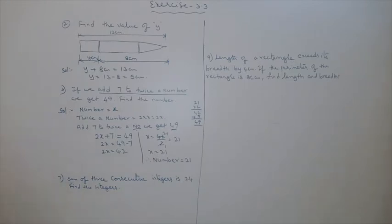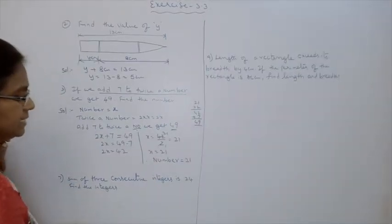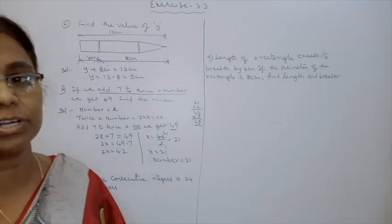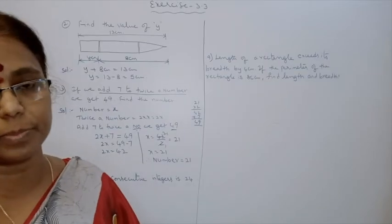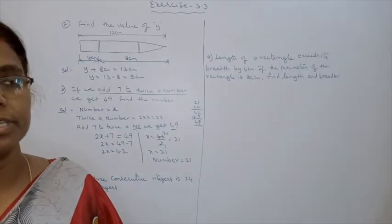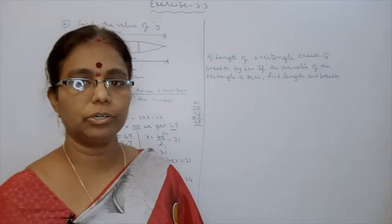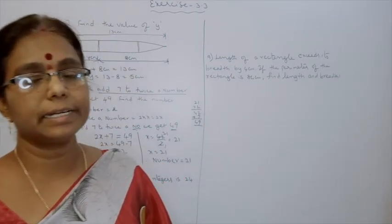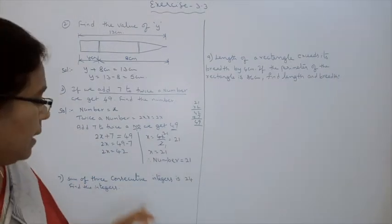Next: sum of 3 consecutive integers is 24. Find the integers. What are consecutive integers? Consecutive integers means continuation numbers — for example, 10, 11, 12; or 20, 21, 22; or 100, 101, 102. Like that, consecutive numbers.